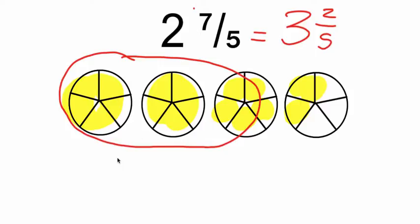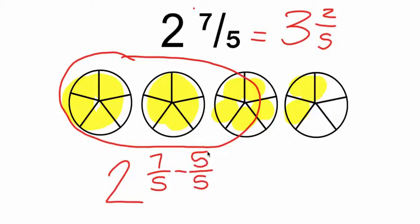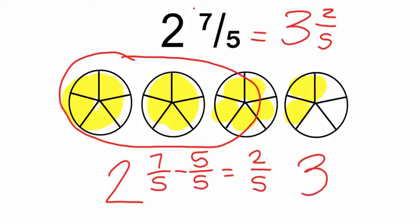All we've done is looked at that improper fraction — seven-fifths right now. We've basically just taken a whole out of that. We're taking five-fifths out. So when we take that out, we get two-fifths. When we take it out, we have to add it back to the whole number. So that's how we get five-fifths plus two is three and two-fifths.